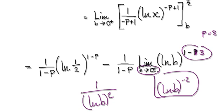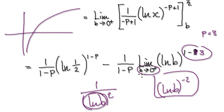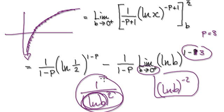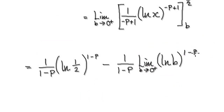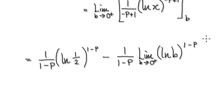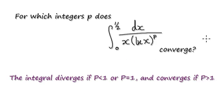Now take the limit as b tends to 0. Looking at the natural log of b graph, as b heads towards 0 it becomes a very, very negatively large number. Squaring it makes it an even bigger number, so 1 divided by a very, very big number heads towards 0. So this here will converge when P is greater than 1. You can use the same argument to show it diverges when P is less than or equal to 1.